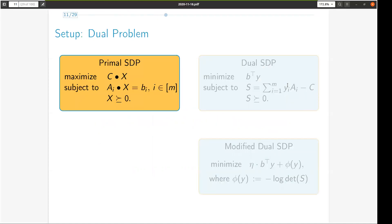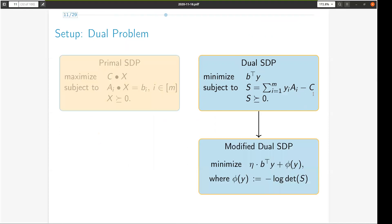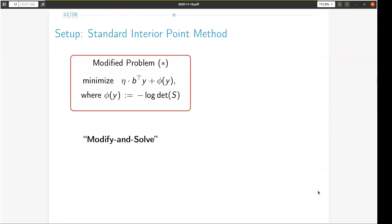Given our primal SDP, we first compute the dual because it reduces the variable size from n square to m. The dual has this matrix called the slack. Per the interior point method paradigm, we modify the dual SDP as follows using the negative log determinant barrier. As mentioned earlier, the way we solve the original problem is to modify eta and solve the resulting subproblem in each iteration.